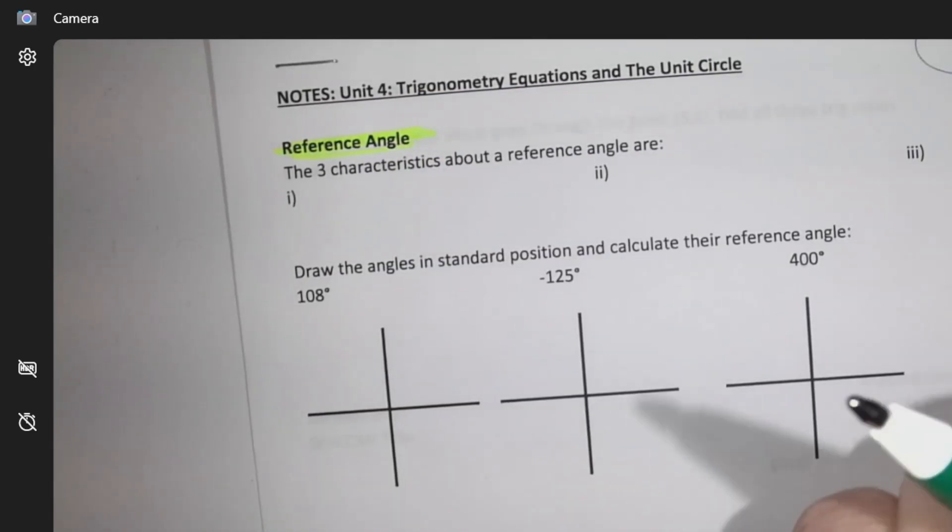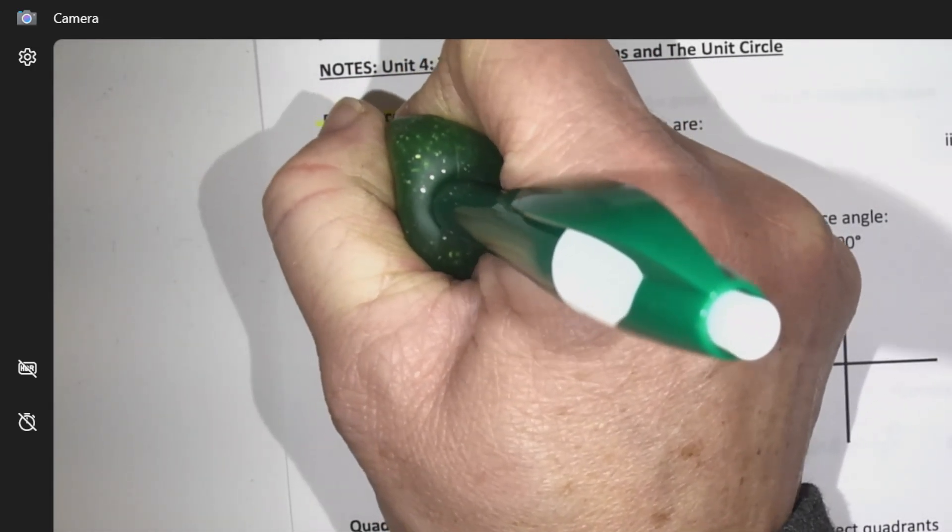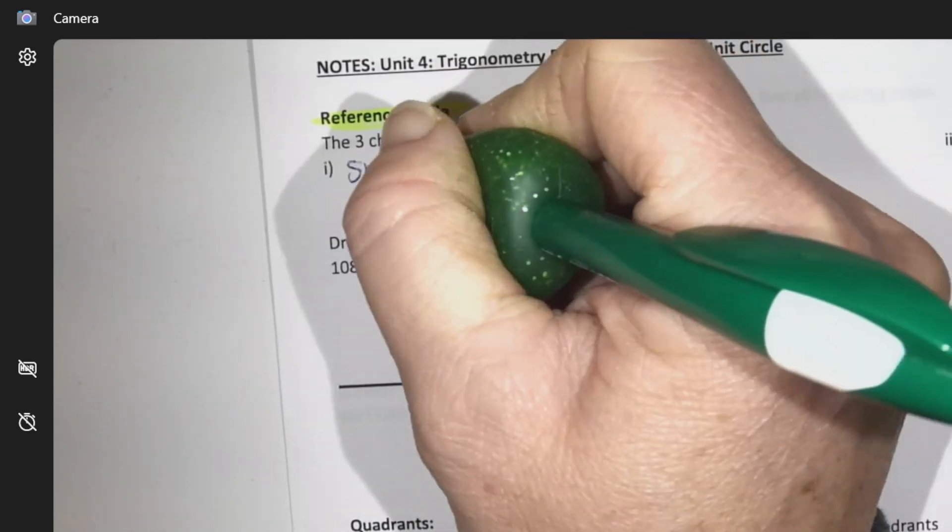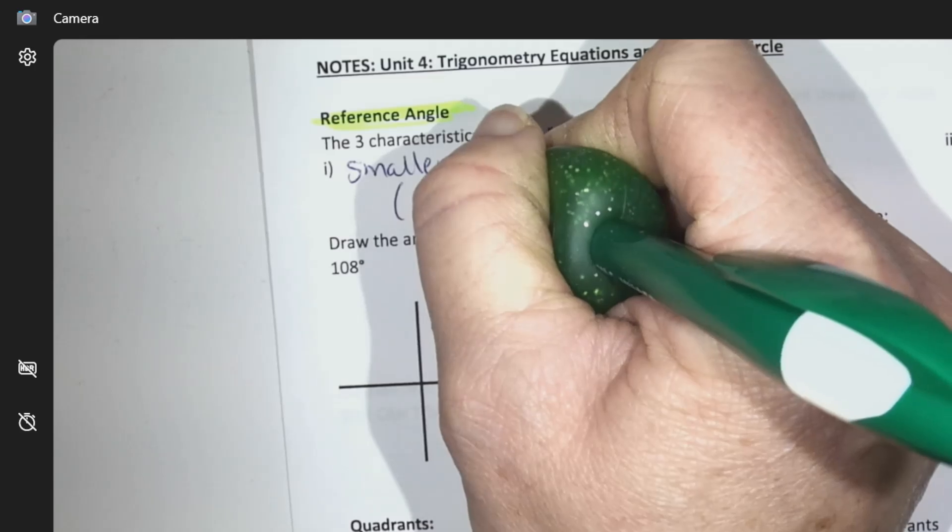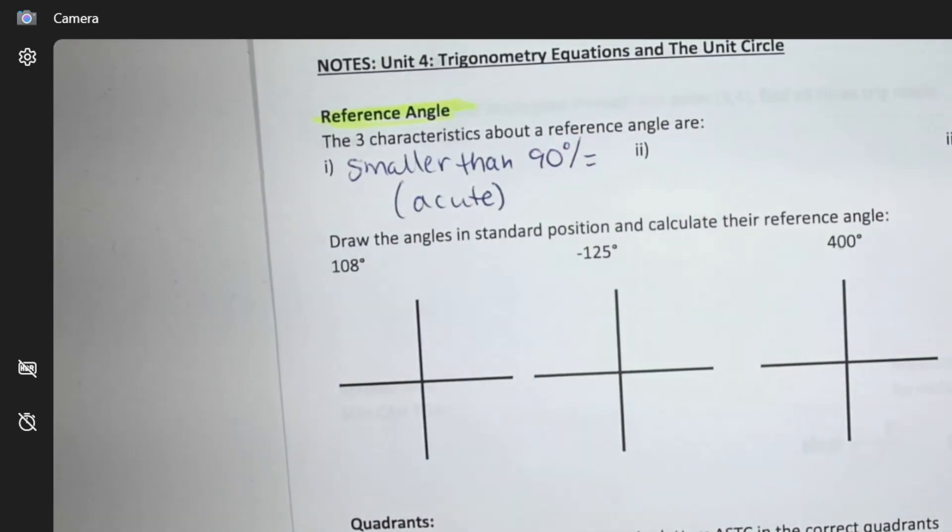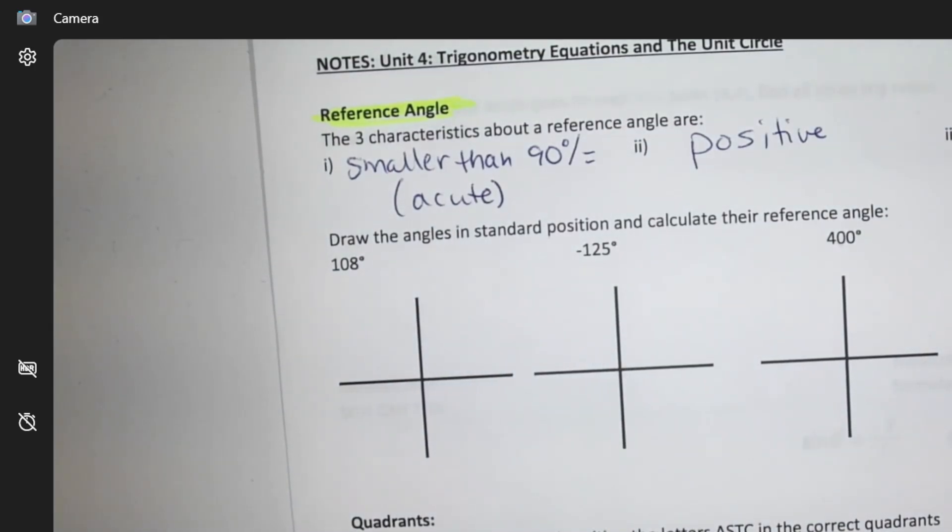A reference angle is an angle that is smaller than 90 degrees, or equal to 90. It can't be bigger than 90, won't ever be bigger than 90. It's always positive. You want that number to be positive.